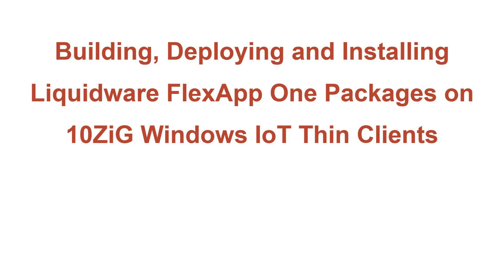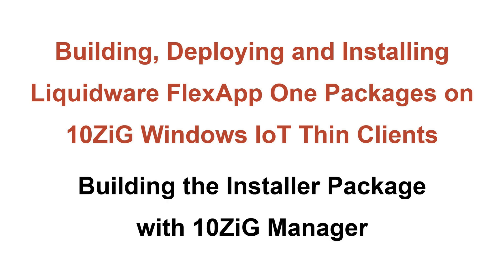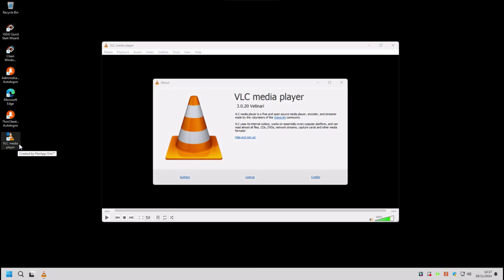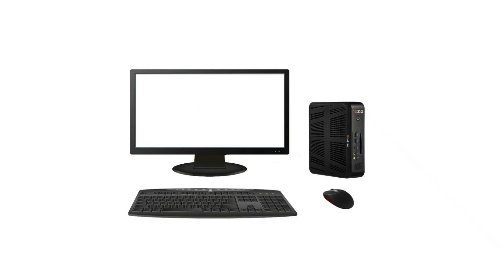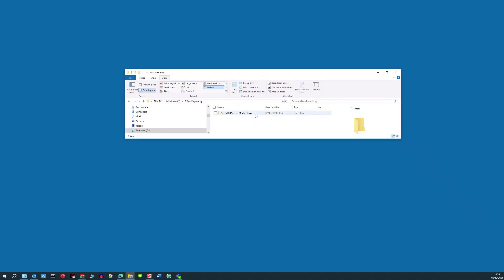In this section we'll show you how to build the first of the Tenzig Manager update packages that will deploy a FlexApp 1 application container to the Tenzig Windows IoT device and then install the FlexApp 1 service and set up the VLC media player. For this first Tenzig update package we're going to deploy two files to the Tenzig device: the actual FlexApp 1 application container itself, and a controlling .bat file that will handle various operations during the update package execution. Let's take a look inside the file dev repository on my PC and open up the folder that contains these first two files.